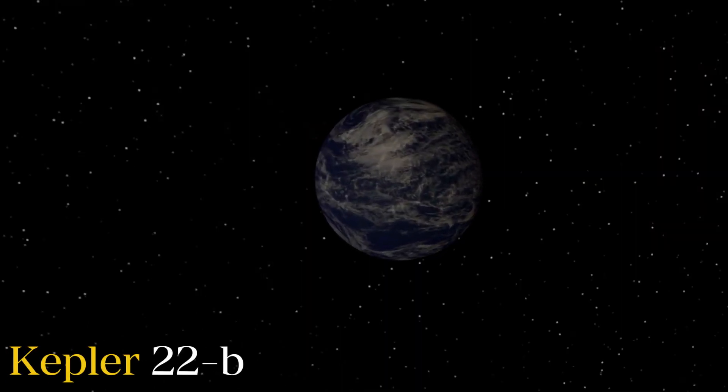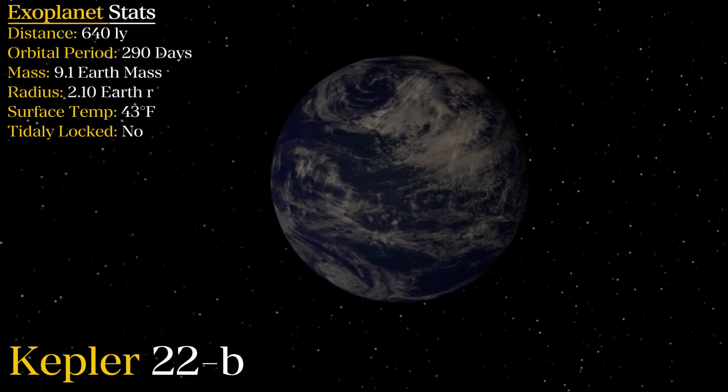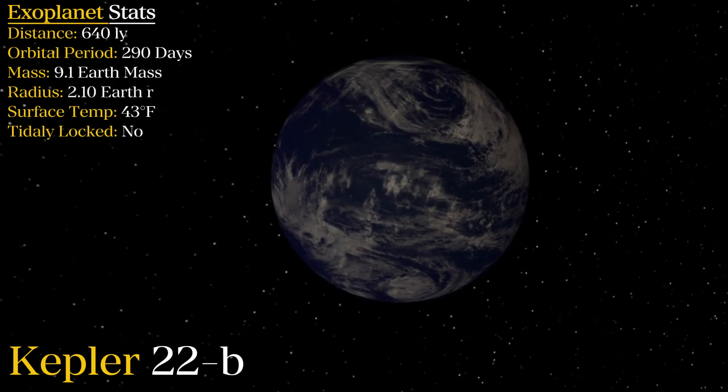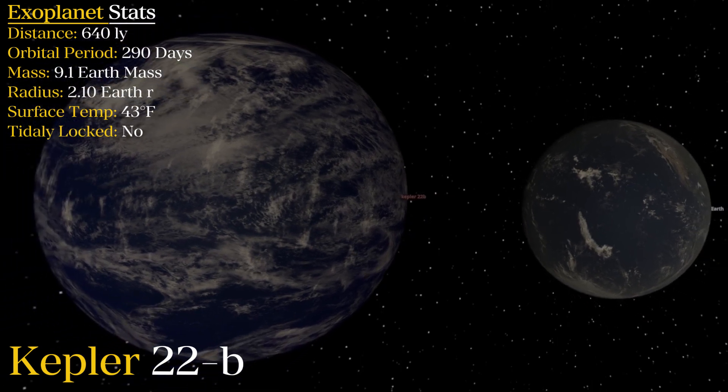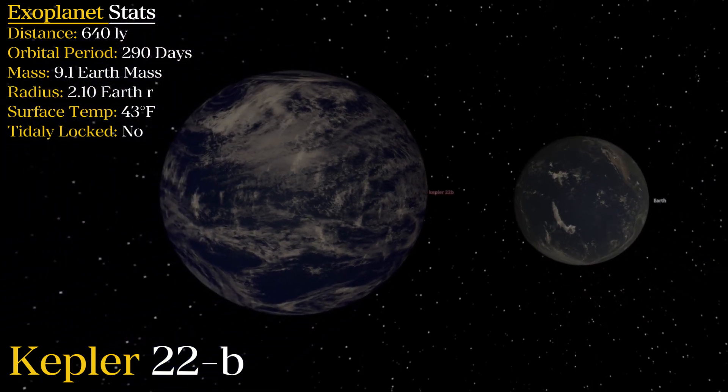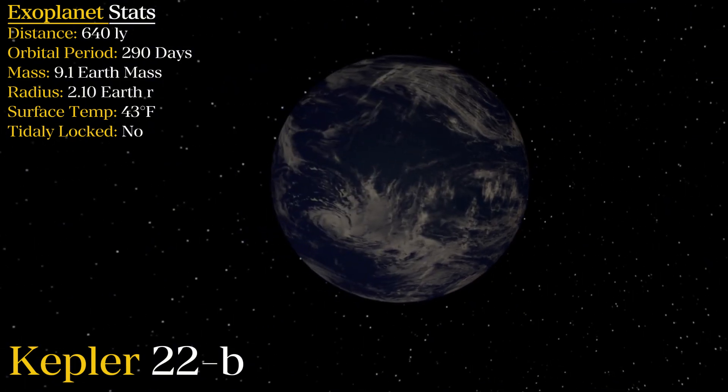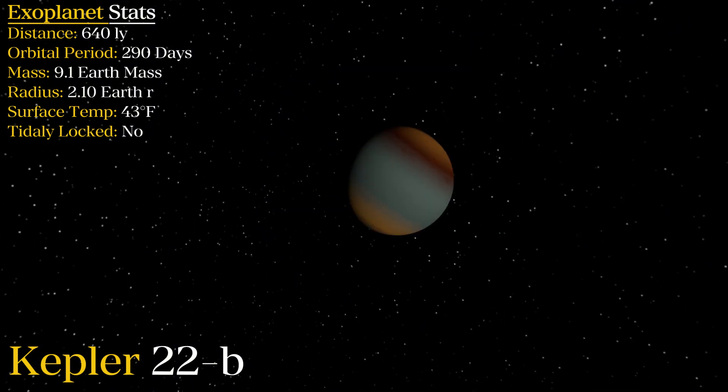Kepler-22b. This exoplanet is absolutely famous for being habitable. People put this in their thumbnails all the time. But having a radius twice of what Earth has, scientists say that Kepler-22b is unlikely to be a rocky world like Earth, but more likely to be an ocean world, or even gaseous, although this is unconfirmed.